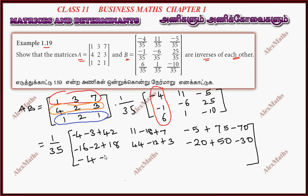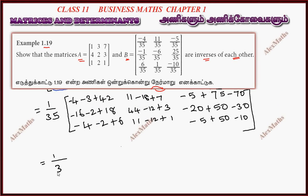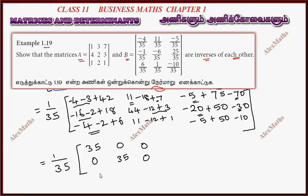Continuing: minus 20 plus 50 minus 30 gives 0. Last row corresponding in the middle: minus 4, minus 2 plus 6; next minus 11, minus 12 plus 1; next minus 5 plus 50 minus 10. So 1 by 35 gives minus 7; 11 plus 7 equals 18; 18 minus 18 is 0; minus 75 plus 75 is 0; minus 18 plus 18 is 0. Further elements: minus 6 plus 6 is 0; 11 and 1 gives 12 minus 12 which is 0. Every element gives 35 divided, resulting in 1, 0, 0 / 0, 1, 0 / 0, 0, 1.